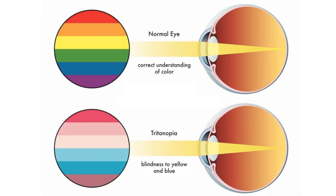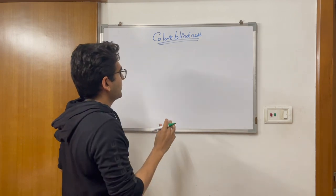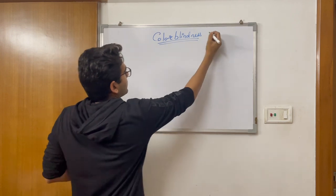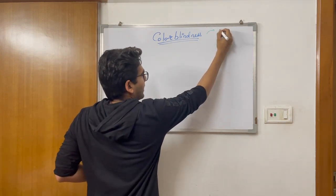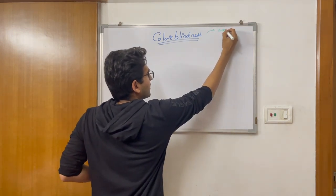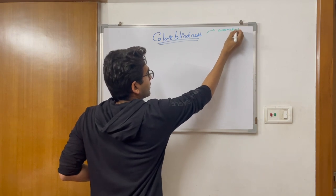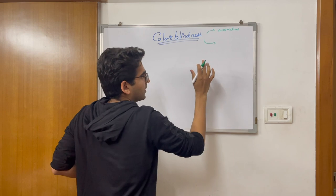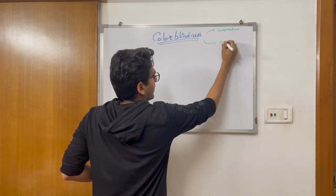So in color blindness, the mechanism to appreciate one or more primary colors is either defective or it is absent. If it is an absence of the cone or receptor, we will call it an anopia.